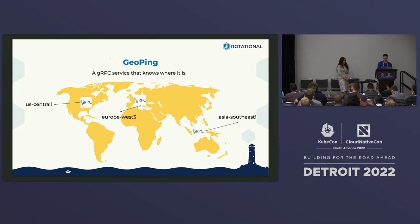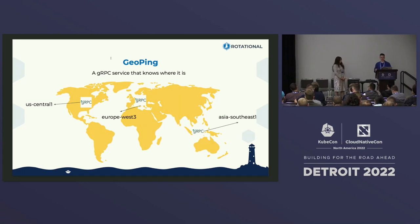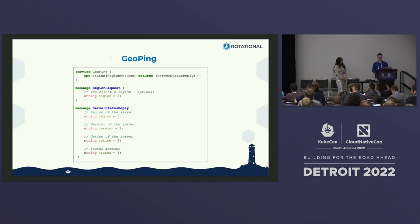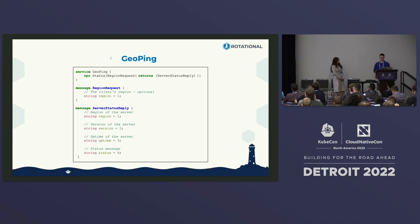This led to the GeoPing project — a gRPC service that knows where it is. It's a glorified version of Linux ping: instead of pinging and getting an IP address, you ping and get a region where the closest server is. We built it to test that our DNS routing is actually working, since we're relying on an external service for that. The service definition is simple — one RPC status call that returns information about the server you've connected to.